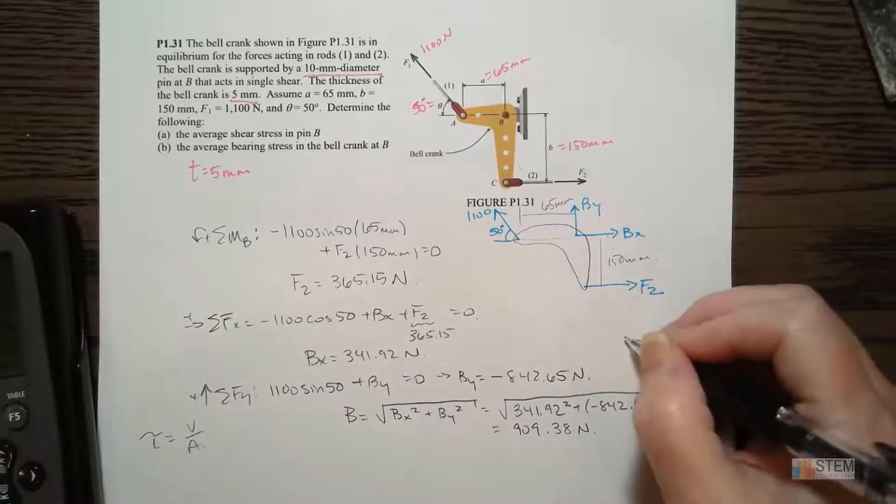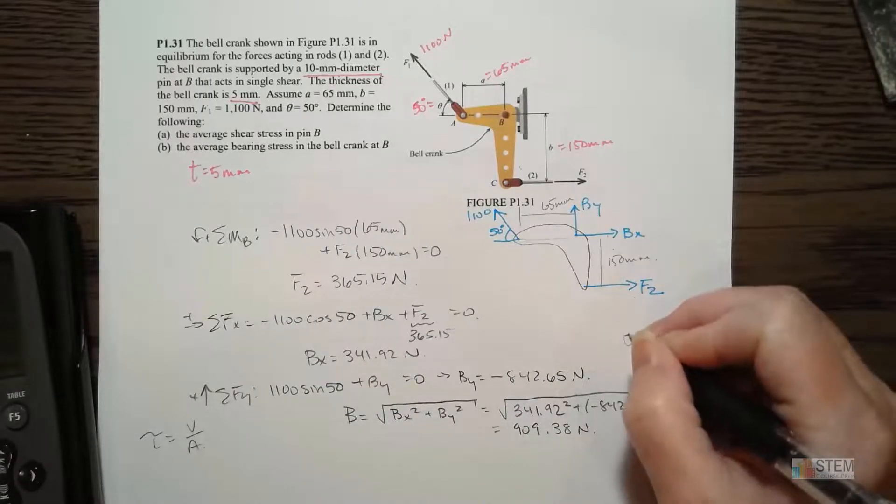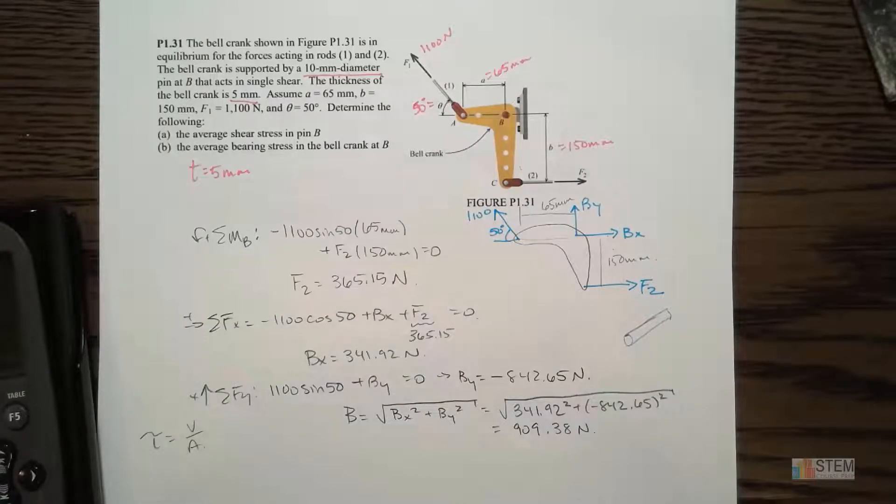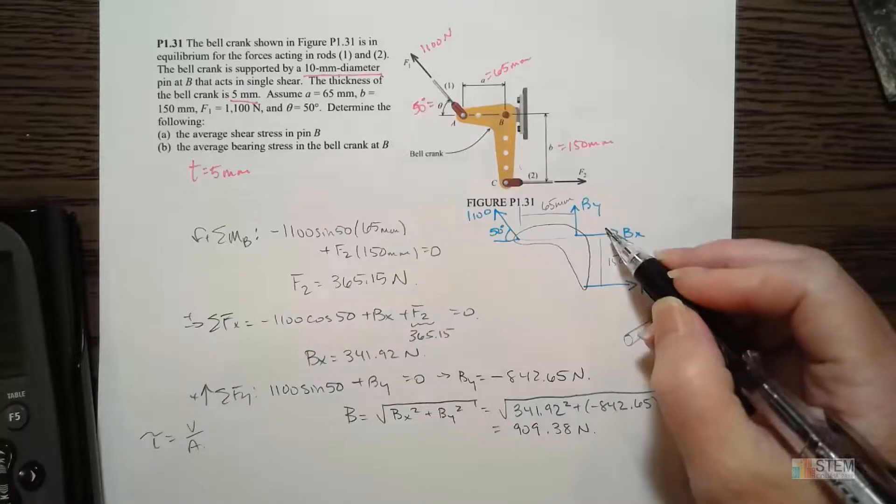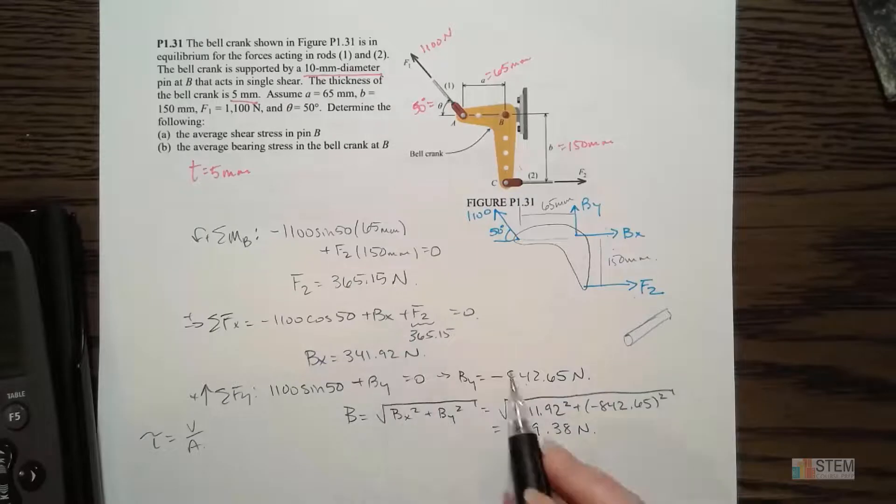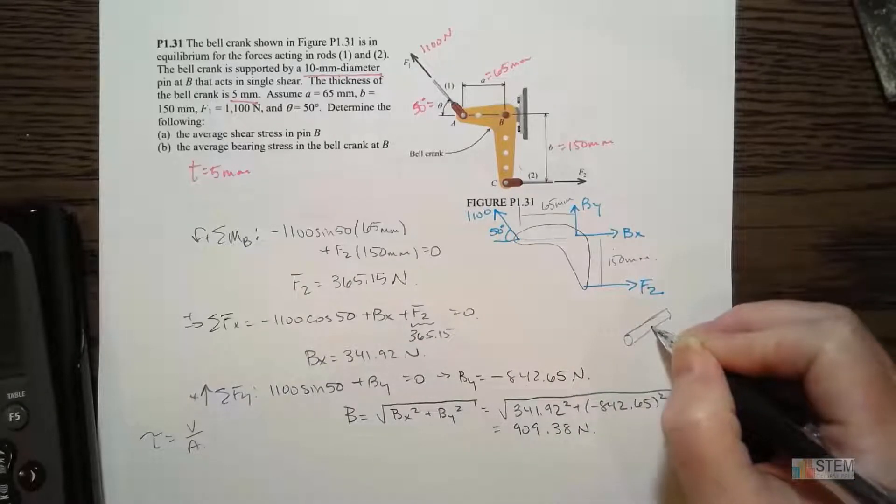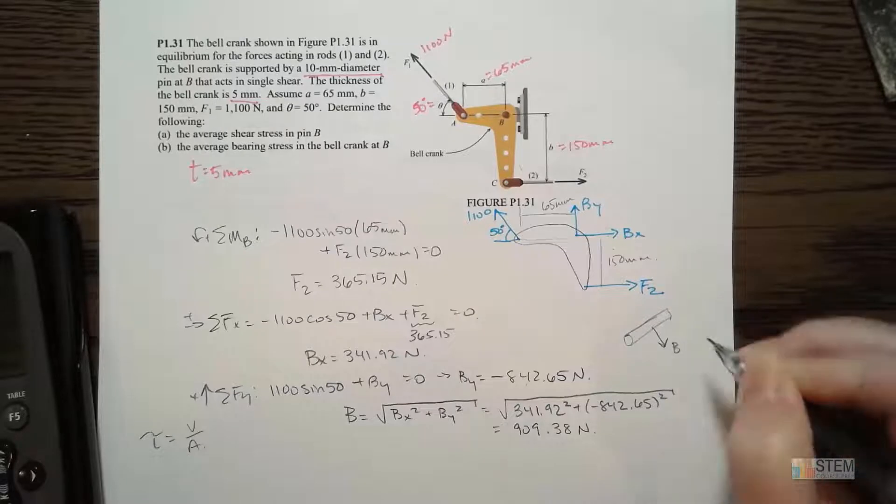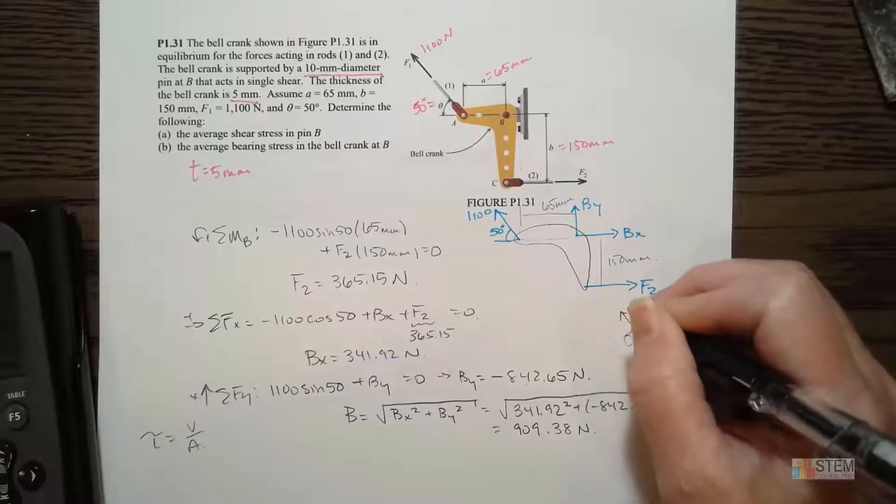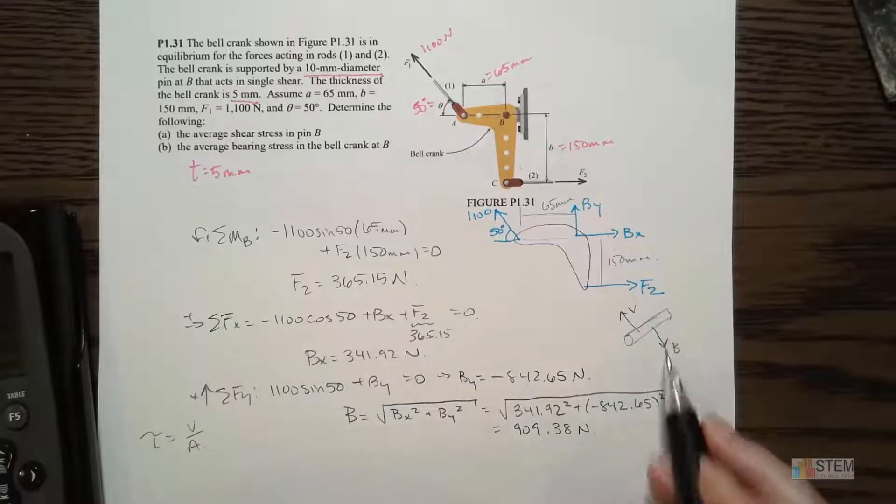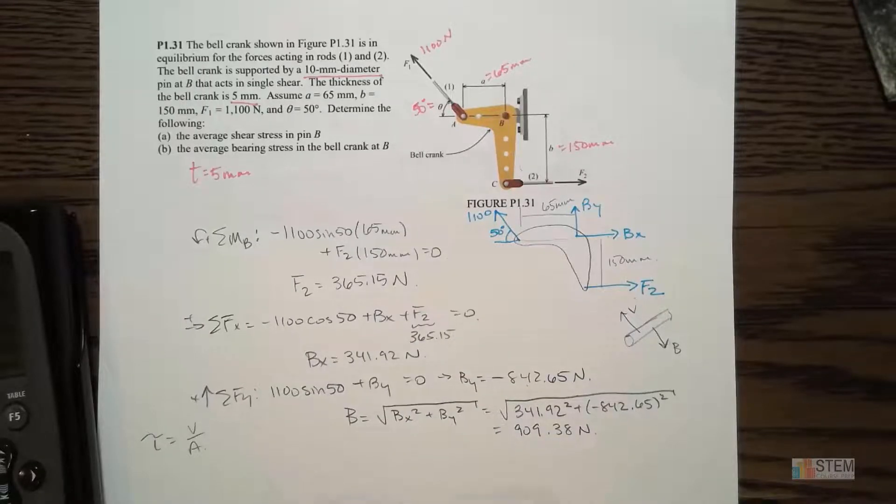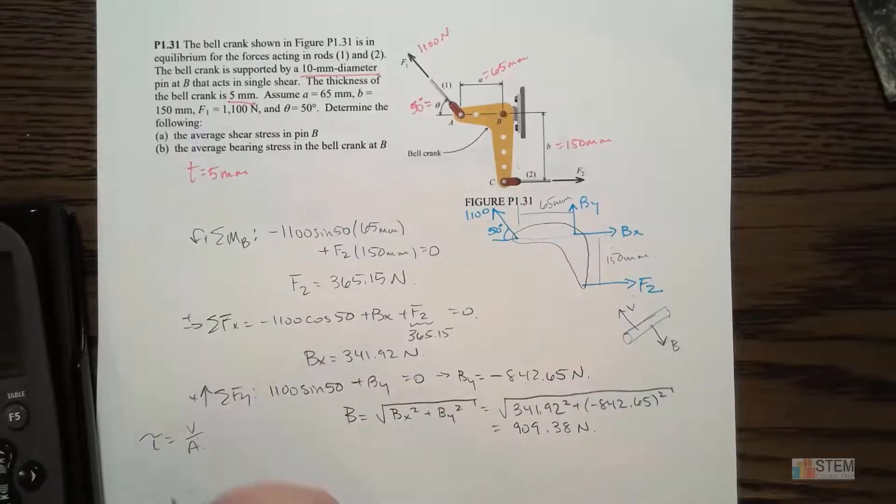If you're wondering why that is, if we look at B, like the pin, let's just draw the diagram here of the pin. It's in single shear, so it only has one shear force. Now, if I look at my direction for B, we have a positive X and negative Y. So that means our magnitude is kind of like that. And then if we're going to have a shear, it's going to be in the opposite direction here. So there's only the two, so V has got to equal the value of B. So that's what we're going to plug in to our shear equation.